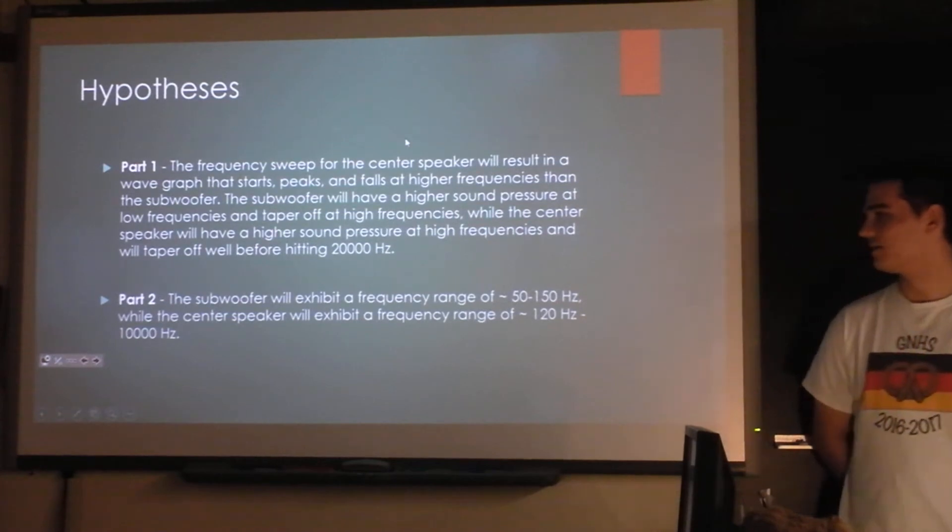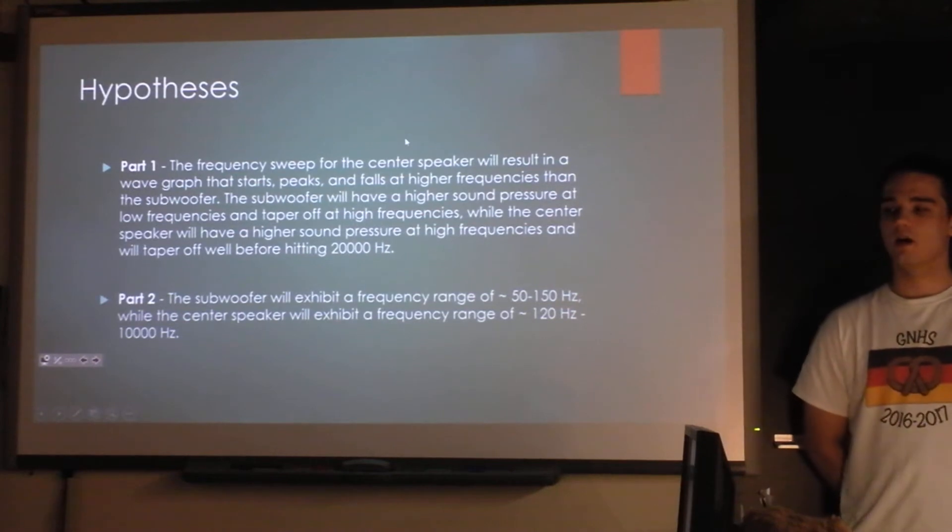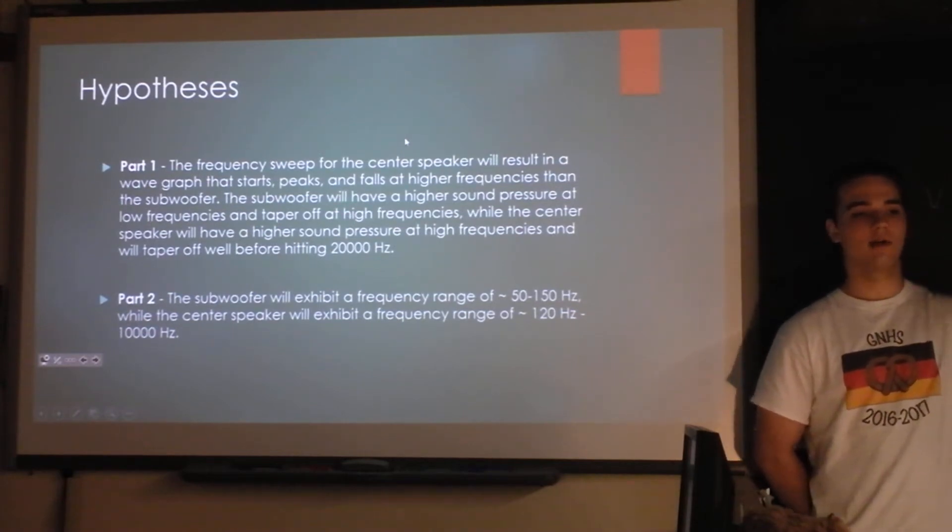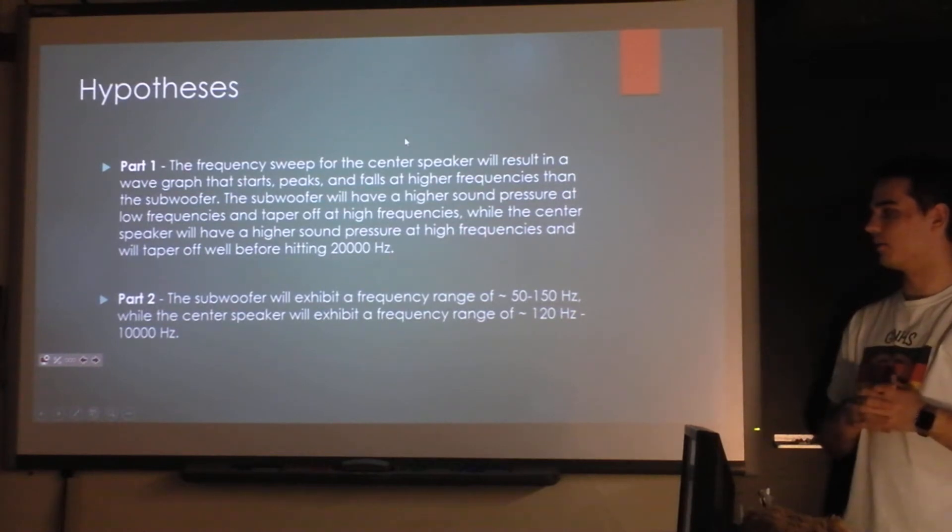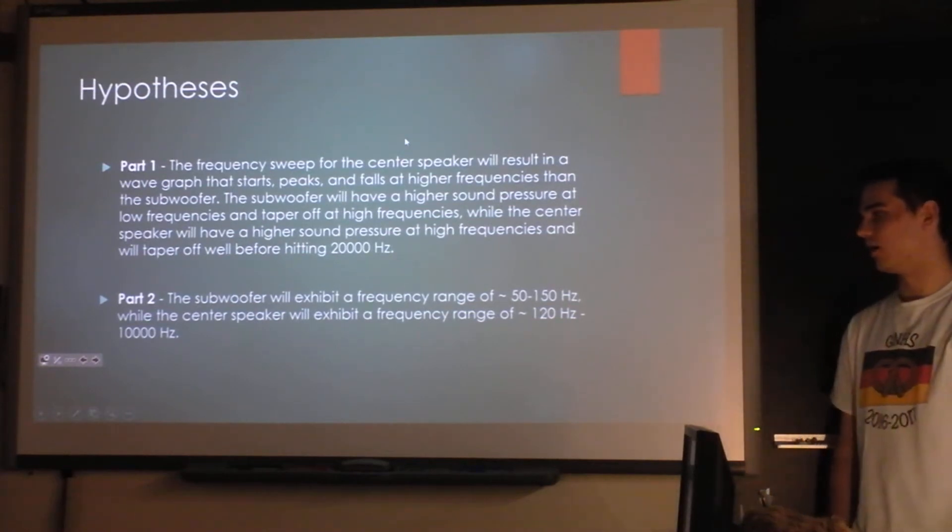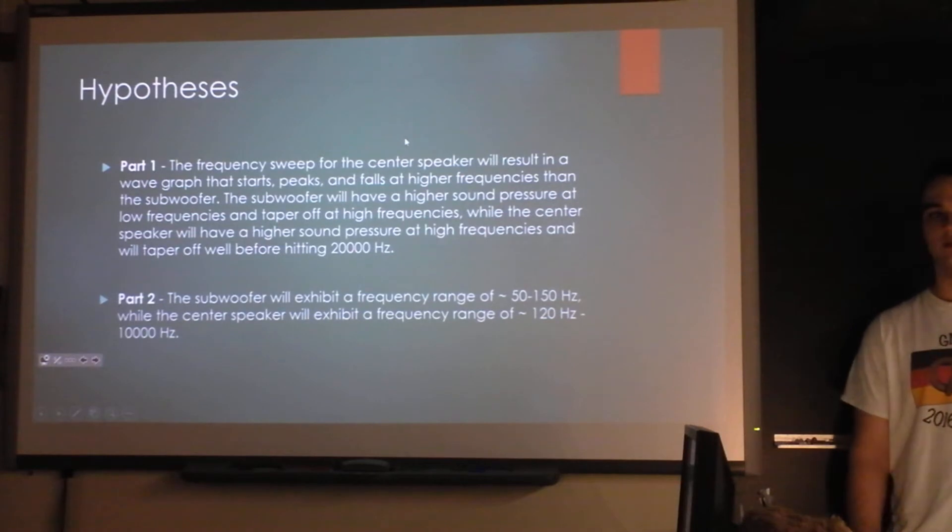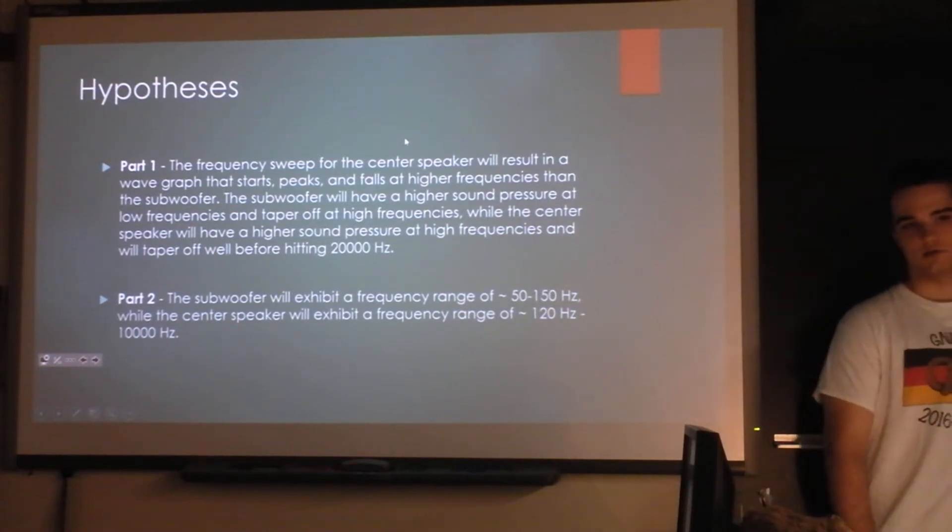For part two, what I did was I did set test tones. So I would do 50, 100, 150, 200, 250, and 300 hertz, just playing that tone, let it ring out, taking data, and compiling those into a graph and comparing the subwoofer versus the center speaker. So I hypothesized that the subwoofer would exhibit a frequency range expressing most of its sound pressure between 50 and 150 hertz, and the center speaker would exhibit a range of about 120 to 10,000 hertz.